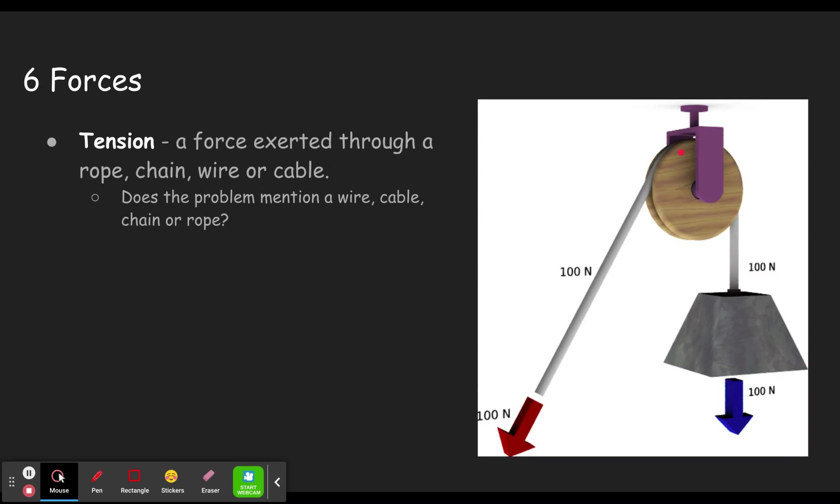All right, our next, our fourth kind of force is tension. So tension is a force exerted through a rope, chain, wire, or cable. So for the purpose of this concept builder, if you see it mention a wire, a cable, a chain, or a rope, then there's tension.